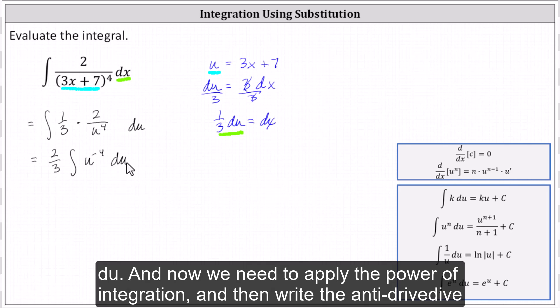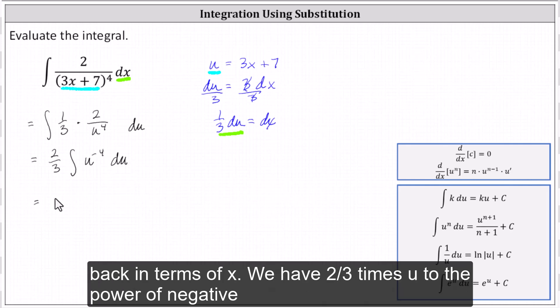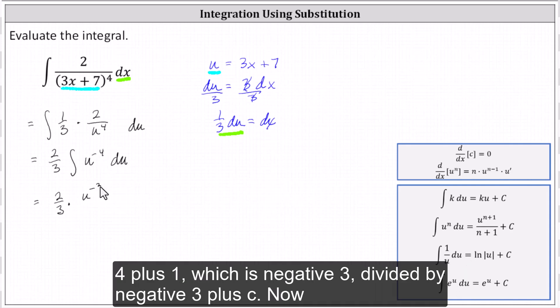And now we integrate applying the power rule of integration and then write the antiderivative back in terms of x. We have 2/3 times u to the power of negative 4 plus 1, which is negative 3, divided by negative 3 plus c.